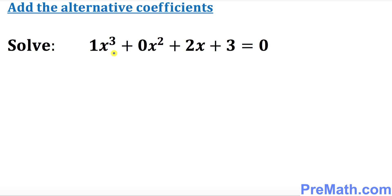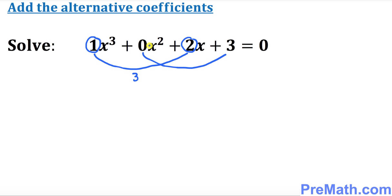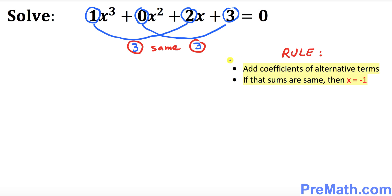In this step, what we're going to do is add the coefficients of alternative terms. So we add these two coefficients and these two coefficients. 1 and 2 makes 3, and 0 and 3 makes 3 as well. Both sums are equal, so by this rule, one of our solutions is going to be x equals negative 1 for sure.